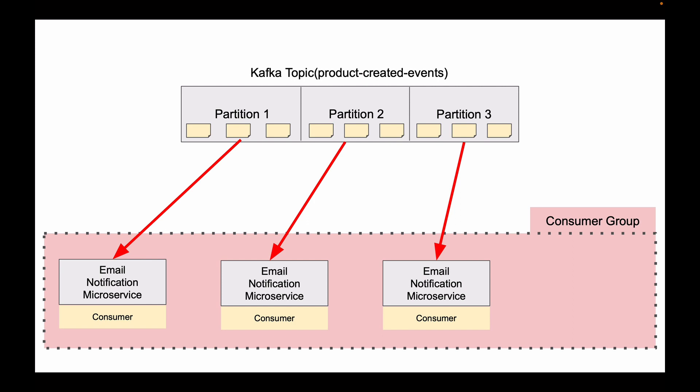During partition reassignment, Kafka tries to make sure that each partition is consumed by one consumer in the group. Once rebalancing is complete, all consumers in the group will continue to consume messages from their assigned partitions in parallel.